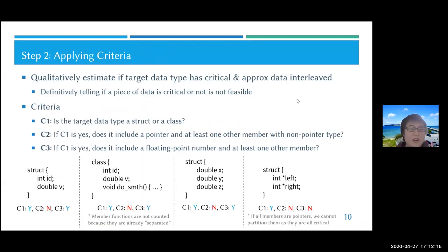The second step is applying three criteria to qualitatively estimate if the target data type has critical and approximate data interleaved. This is qualitative because definitively telling if data is critical or not is infeasible, as it depends on each workload and use case. C1 asks: is the target data type a struct or class? Because if it's not, there's no problem.